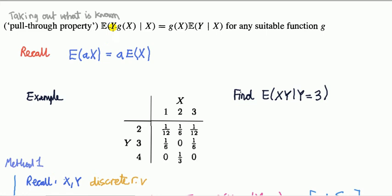The pull-out property, in its conditional version, says: given the expected value of two random variables Y and some function G of X, the expected value of Y·G(X) given X is equal to G(X) pulled through — it comes out — times the conditional expectation of Y given X. In other words, it's the conditional version of the standard property.